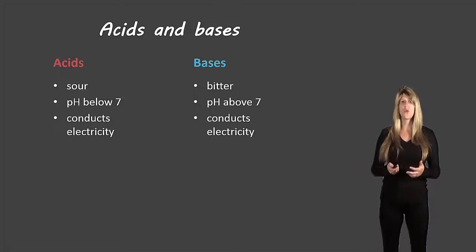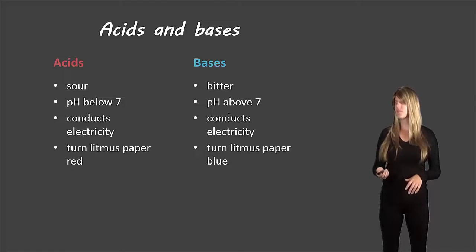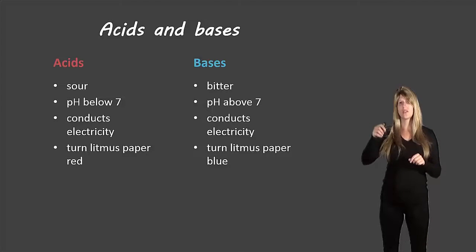Acids and bases both conduct electricity. Acids turn litmus paper red. So litmus paper is a special type of paper that helps you determine if a substance is an acid or a base. If you dip it into an acid, the color will turn red. If you dip it into a base, the color will turn blue.